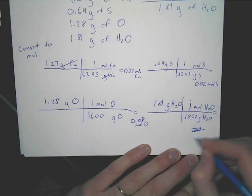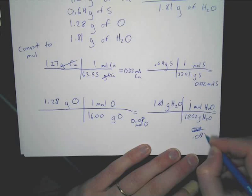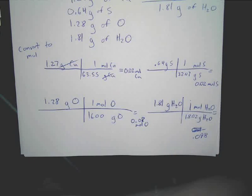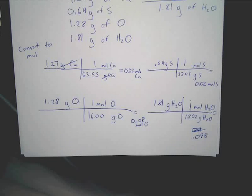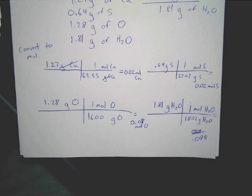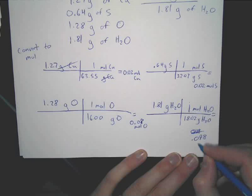We'll go with 0.098 for water. As a tip: do not round these until the end. If you get 0.098, keep it at 0.098. The more exact you are, the more whole numbers you'll get, which will make things easier.